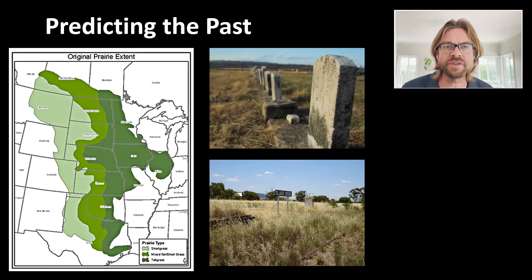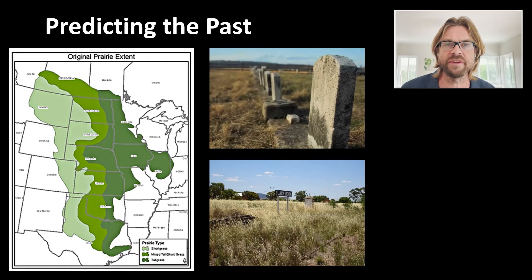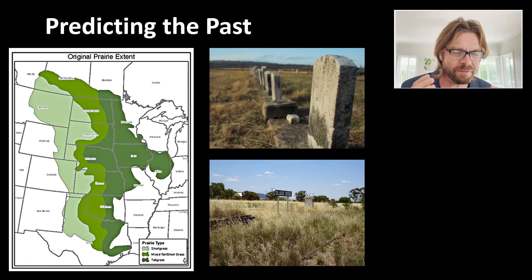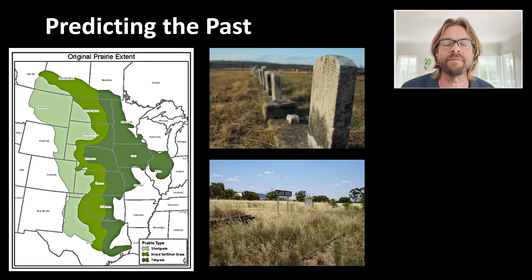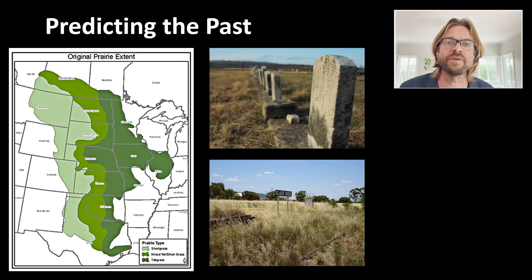When we start to use this information, we can leverage it to understand how microbes associate with different environments and which ones are important. Working with Noah Fierer from the University of Colorado Boulder about eight years ago, we were able to use metagenomics and amplicon sequencing to reconstruct the microbial biogeography of the prairie that used to exist across the majority of the Midwestern United States.